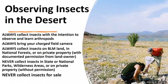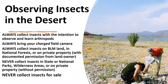When observing insects in the desert, some dos and don'ts: always collect with the intention of observing and learning about arthropods, perhaps donating to a museum. Make sure you're collecting on land where it's legal — not on private property without permission, not in state or national parks unless you have a permit. I also believe you shouldn't collect insects for sale. We want to go out to the desert to learn and observe.